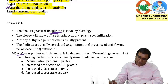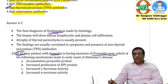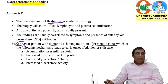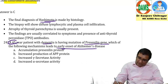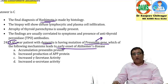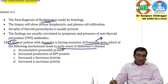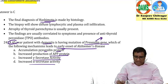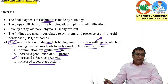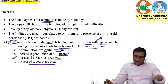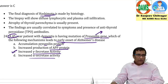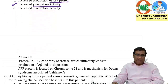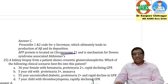Question 24: a 45-year-old presents with dementia and has a presenilin gene mutation. Which mechanism leads to early onset Alzheimer's? Options: accumulation of presenilin protein, increased APP protein, increased gamma secretase activity, increased alpha secretase activity. The answer is option C. Presenilin 1 gene mutation causes increased gamma secretase activity. APP protein is located on chromosome 21 — that mechanism relates to Down syndrome.